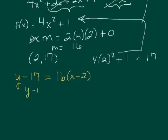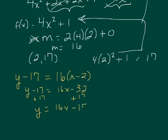So I got y minus 17 equals 16x minus 32, add your 17. So we have 16x minus 15, and that's the equation of the tangent line.